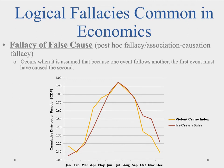An example is the relationship between ice cream sales and criminal activity. In many large cities, an increase in ice cream sales is followed closely by an increase in violent crime. Concluding that ice cream sales lead to violent crime is erroneous.